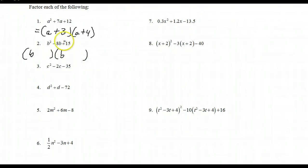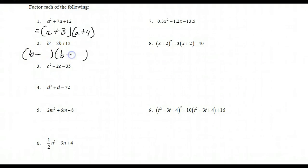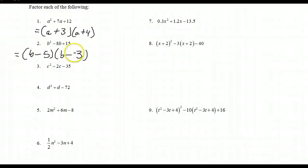Here we have b² plus 15. Two numbers that multiply to 15 — since the product is positive they must be the same sign, and the negative middle term tells me they are both minuses. The numbers are 5 and 3. Check: b squared minus 3b minus 5b gives minus 8b, plus 15.